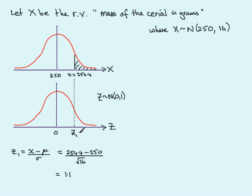Okay, so Z1 is 1.1, and remember what that means is that 254.4 is 1.1 standard deviations above the mean here of 250.